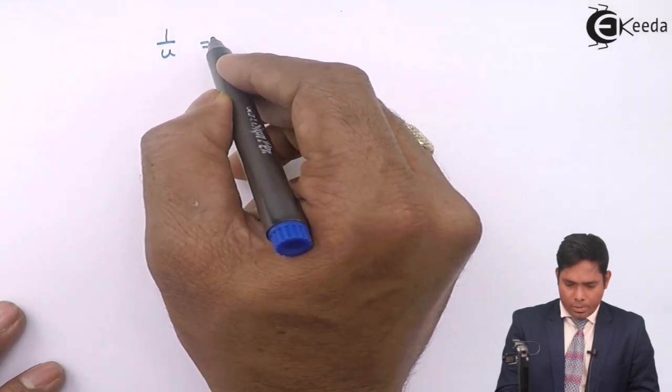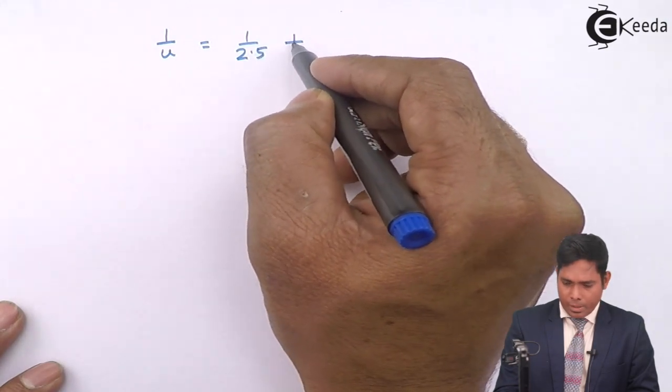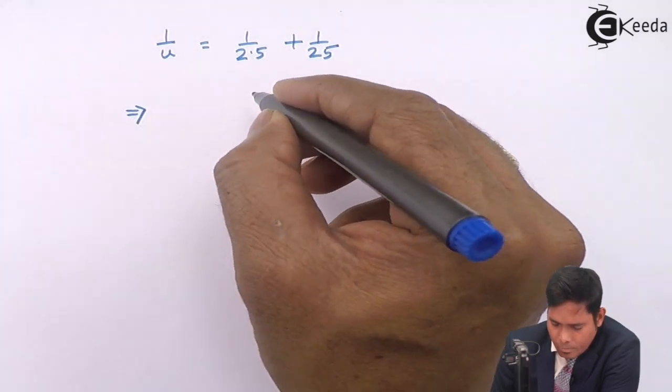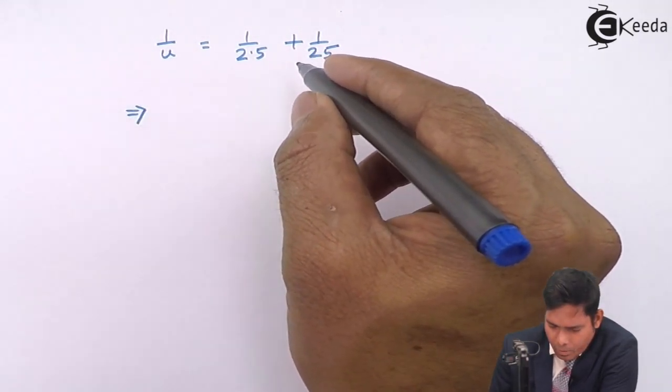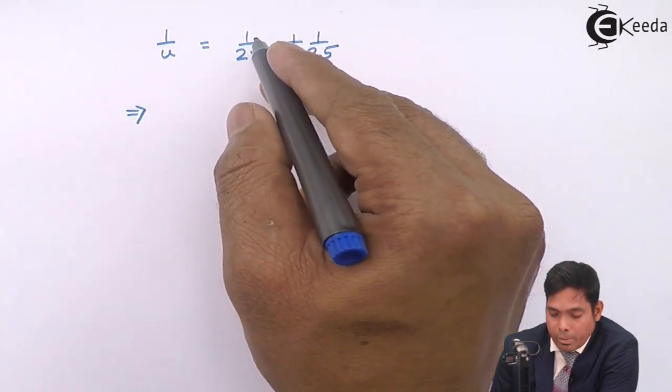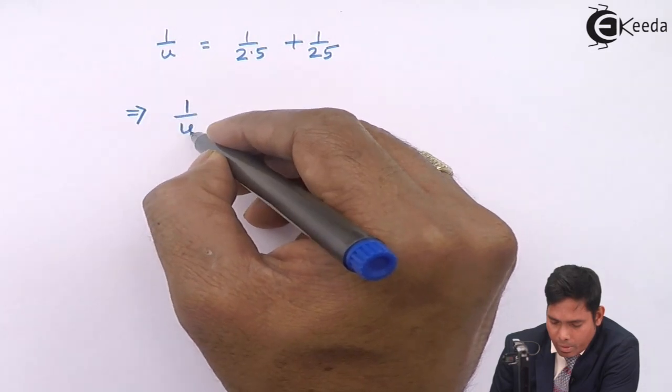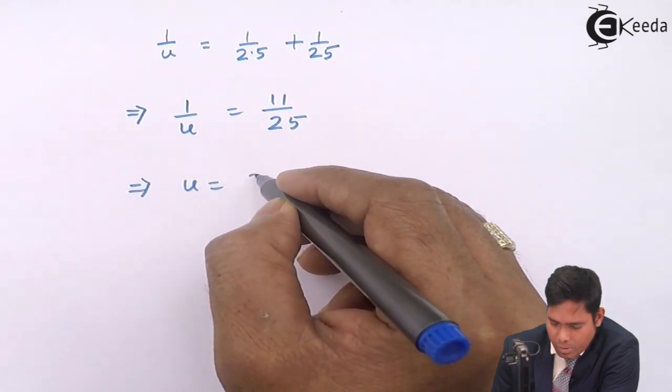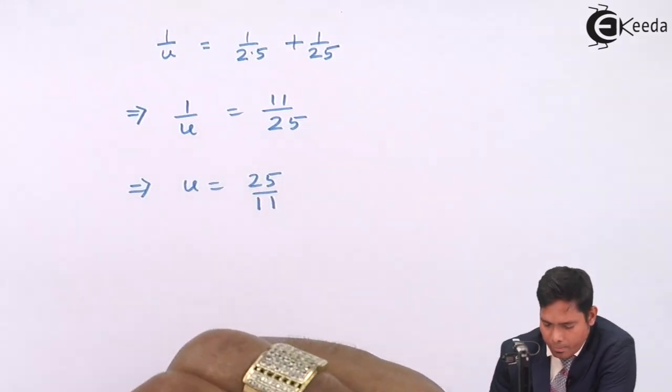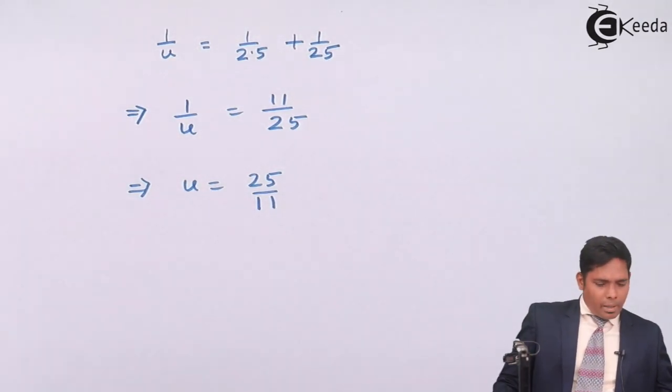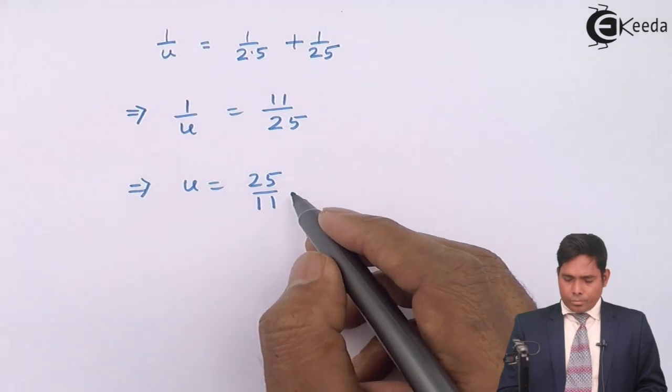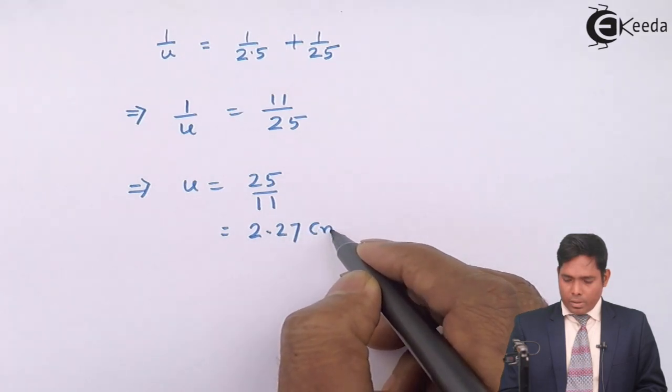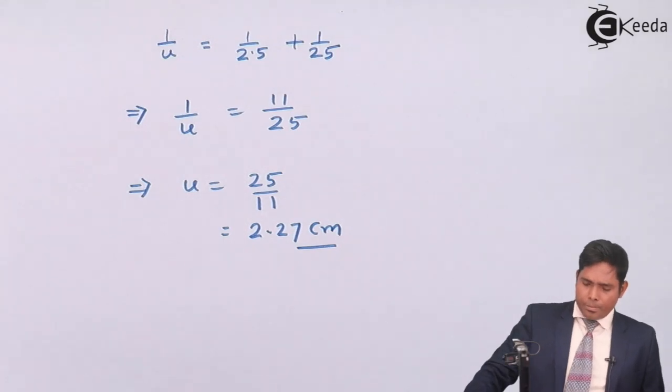1 by U equals 1 by 2.5 plus 1 by 25. I can write this as 10 divided by 25, so it's 11 by 25. So 1 by U is 11 by 25. So this implies that U is 25 divided by 11, and it comes out to be 2.27 if you solve this, you get 2.27 centimeter.